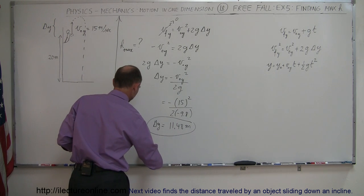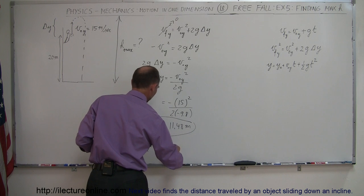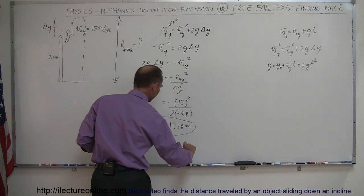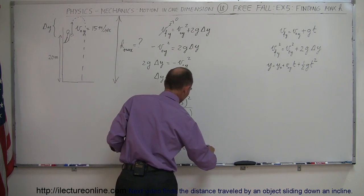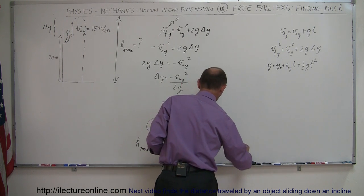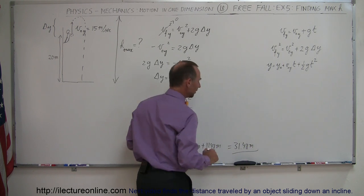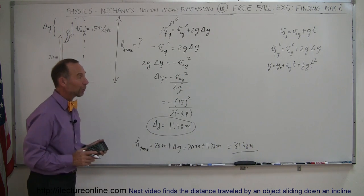So H max will be equal to 20 meters plus delta Y, which is 20 meters plus 11.48 meters. And so this would be equal to 31.48 meters out to two decimal places. And that's how we do that problem.